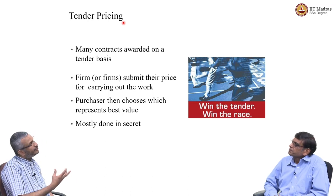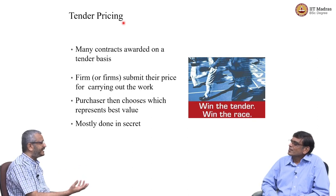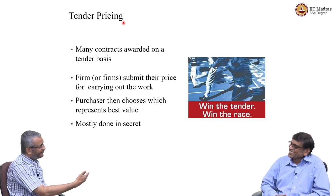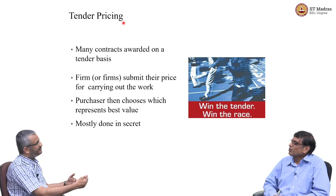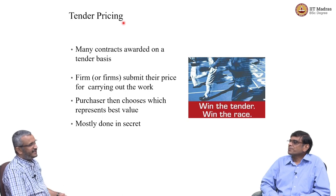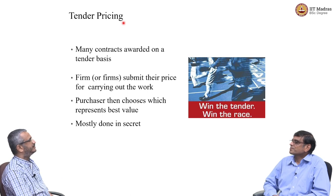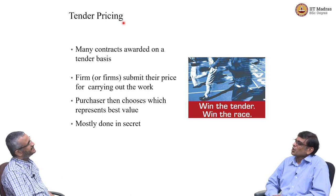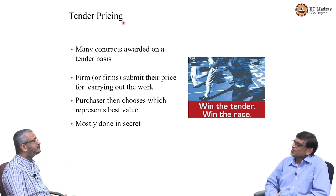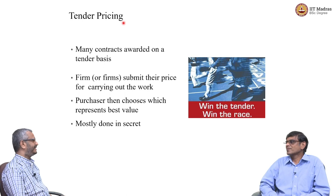Entry barriers in tender markets are quite high, and the possibility of collusion is also high. With only four or five players who know each other, they may decide: 'This time you go ahead, I am not bidding.' If information flows between these players, they arrive at a collective arrangement, undermining the efficiency of auction markets and making tender pricing less effective.